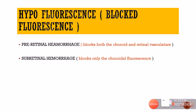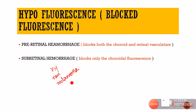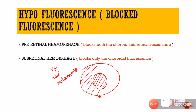Blockage of the retinal fluorescence can happen due to hemorrhages — it could be a pre-retinal hemorrhage, a sub-retinal hemorrhage, or even a vitreous hemorrhage. Blockage of the choroidal fluorescence can also occur whenever there is a lesion like a nevus or a melanoma. Such lesions are going to block the fluorescence and we are going to see a dark area in the fundus, surrounded by the normal fluorescence.